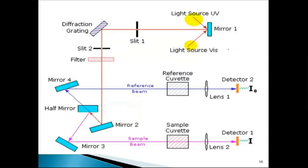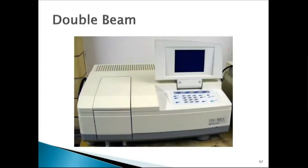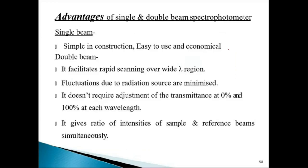This is another block diagram of a double beam instrument where two detectors are used. This is a double beam instrument — most of you must have seen this in your B.Pharm lab.